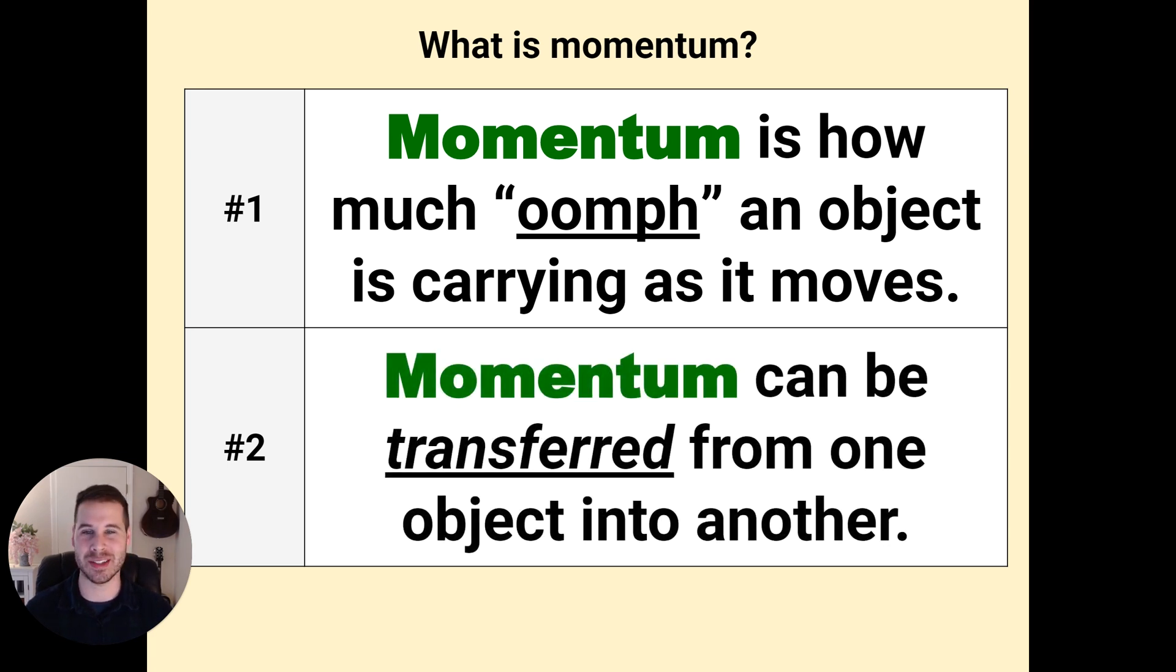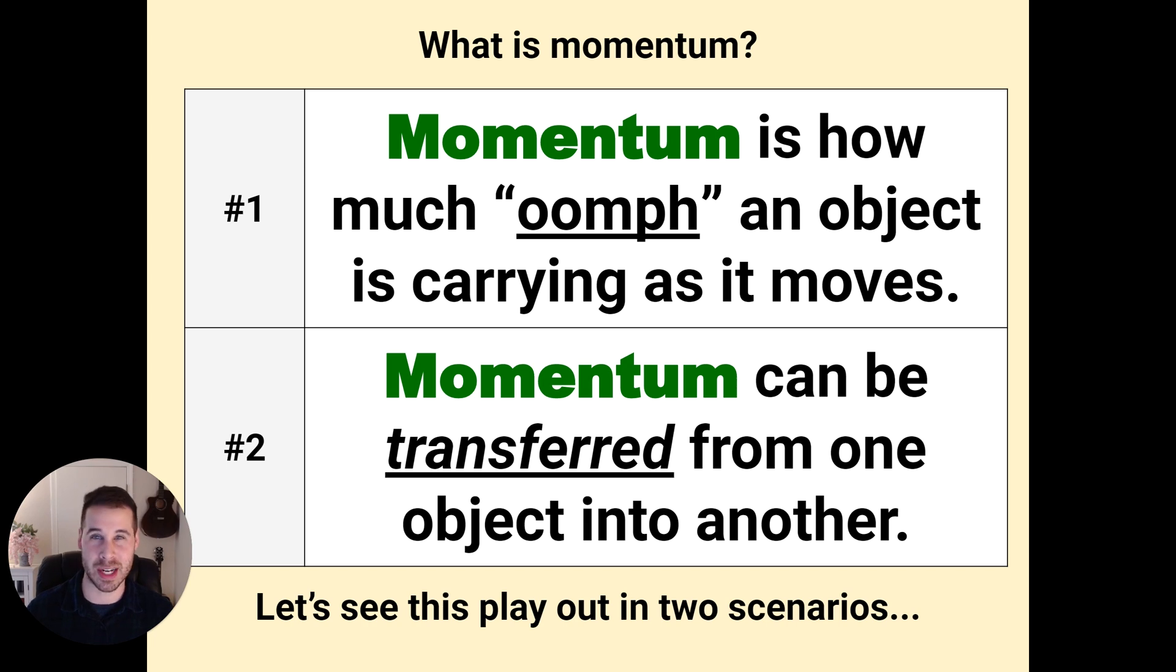The second thing I want you to consider is that momentum is something that can be transferred from one object to another. That kind of matches with the idea we were just talking about. So with these two thoughts in mind, let's see momentum play out in two scenarios, and then I think we'll have a pretty good understanding of how it works and what kind of variables go into determining how much momentum an object has.